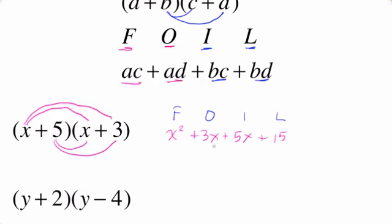Now one thing you should notice is that 3X and 5X are actually like terms. This is going to happen most of the time when you have the same structure. In this case, it was an X plus a constant, and the other binomial was also an X plus a constant. So our final answer is actually going to be X squared plus 8X plus 15.